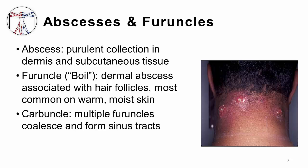Furuncles are most common in areas where moisture from sweat is able to accumulate, such as the groin, neck, axillae, thighs, and buttocks, but they can occur on any hairy skin surface. If the infection spreads to affect multiple neighboring hair follicles, this is called a carbuncle. The larger collection of lesions may grow together and form interconnecting subcutaneous abscess cavities. Typically, this deep pocket of infection will form one or more draining tracts to the skin surface, referred to as sinus tracts, which are pictured here.